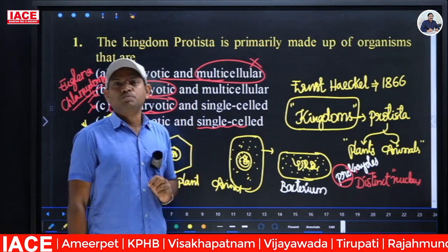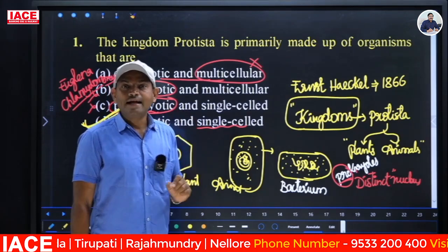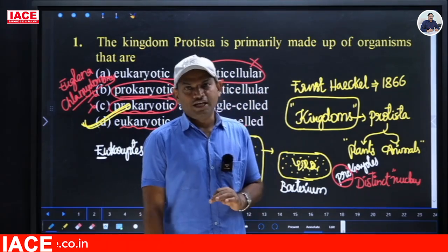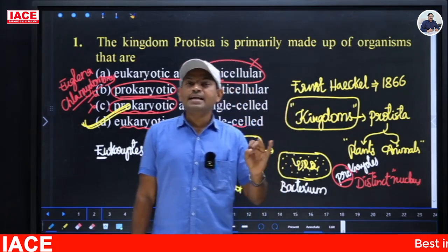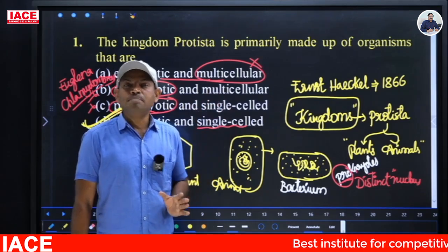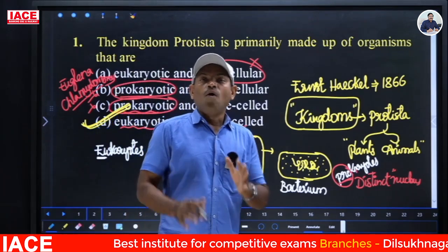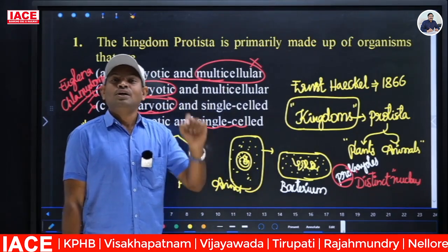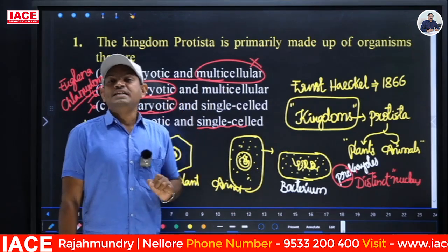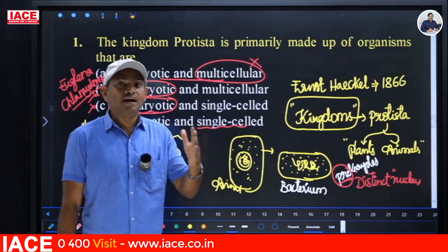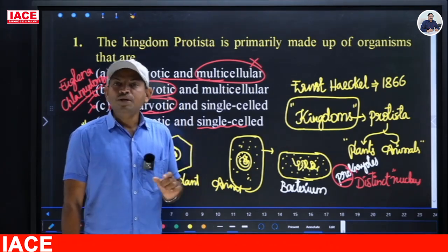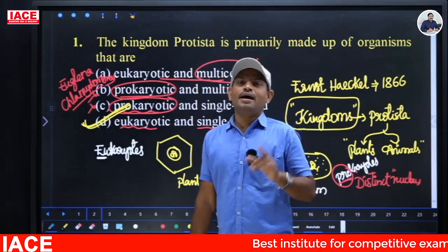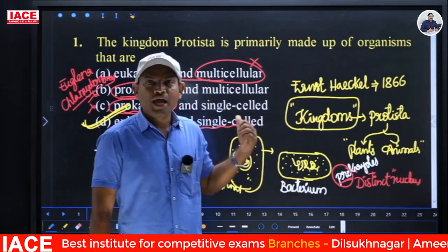There are five kingdoms under classification, proposed by R.H. Whittaker in 1969. The first is Monera (includes bacteria). Second is Protista. Third is Fungi. Fourth is Plantae. Fifth is Animalia. All multicellular animals are in Animalia; multicellular plants in Plantae; non-chlorophyllous, non-photosynthetic saprophytic organisms feeding on dead organisms are in Fungi; unicellular eukaryotic organisms showing both plant and animal characters are in Protista; bacteria are in Monera.